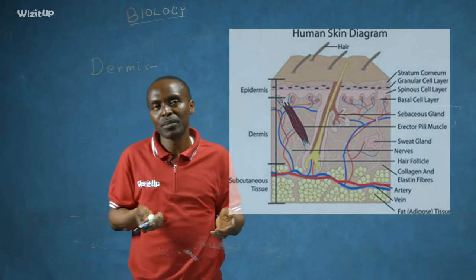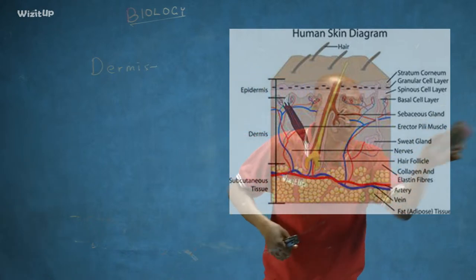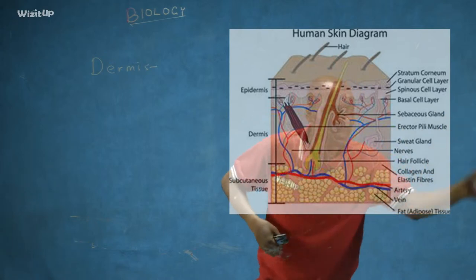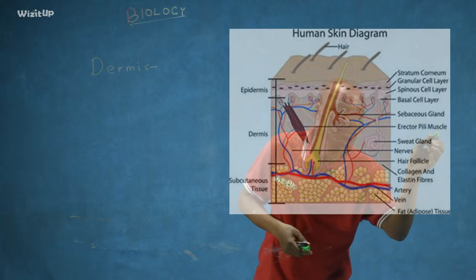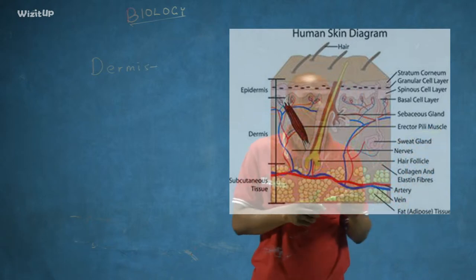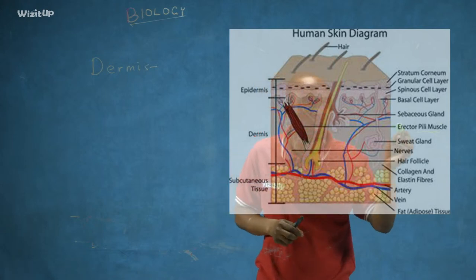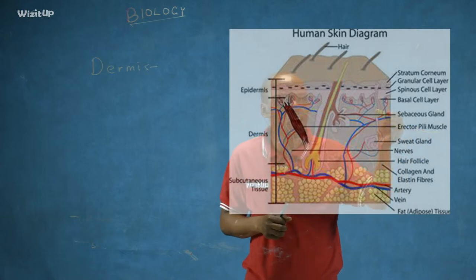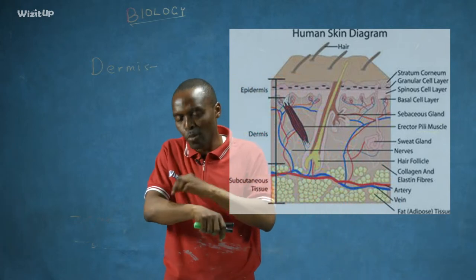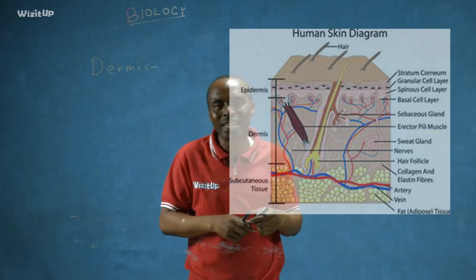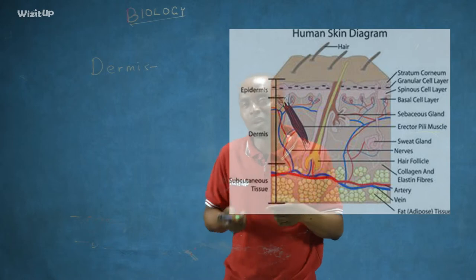The sweat gland consists of continuously coiled tubular structures, as you can see from the diagram. After much coiling, these form a long tubular structure called the sweat duct, which opens to the outside through the sweat pore. If you check your skin surface, you can see some small openings — those are your sweat pores, through which sweat is released to the surroundings.